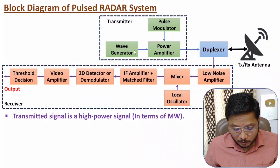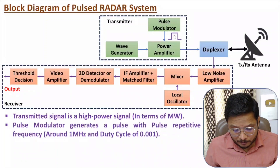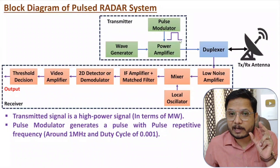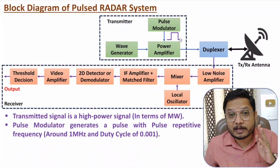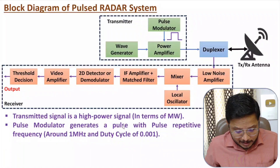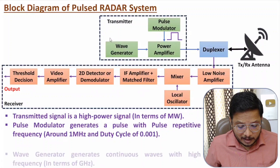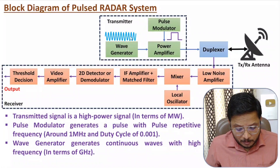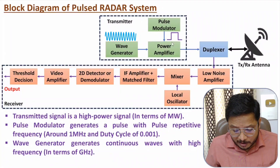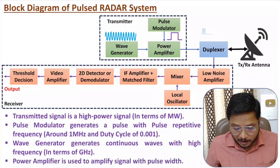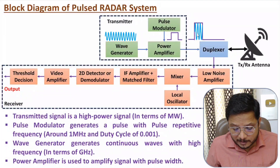Inside the transmitter we have two other elements: the pulse modulator and the wave generator. The pulse modulator generates pulses with a width in terms of microseconds and a frequency in terms of a few megahertz. The pulse modulator generates pulses with a pulse repetition frequency of around 1 MHz and a duty cycle of around 0.001. The wave generator generates the high-frequency carrier wave. This carrier wave is transmitted during the pulse only, using the power amplifier. So after the power amplifier we have a high-power, high-frequency pulse, and that is what we transmit with the antenna.